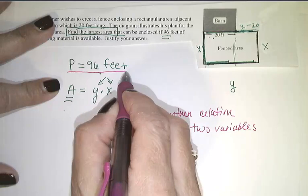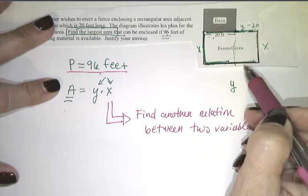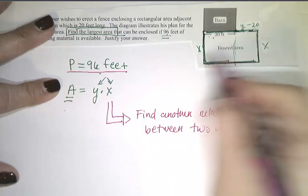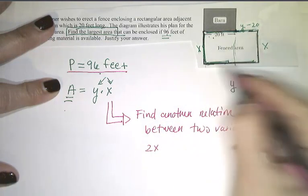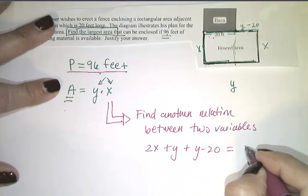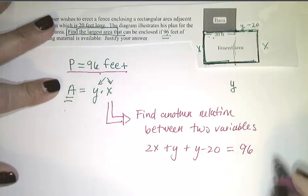I know that the perimeter is 96 feet, and I know that the perimeter can be written in terms of x and y. So what does that tell me? Two x's plus y plus y minus 20 will sum to give me the total perimeter, which is 96 feet.